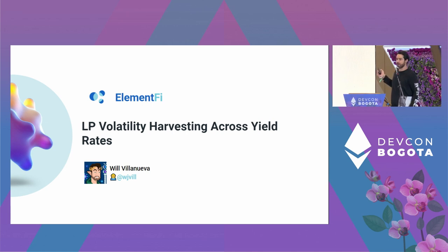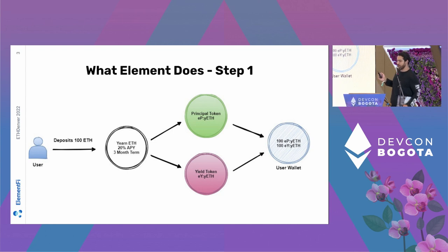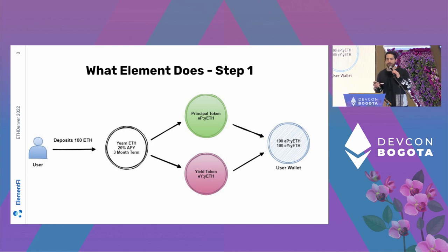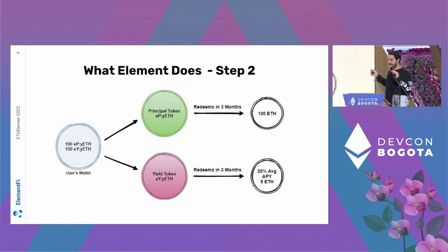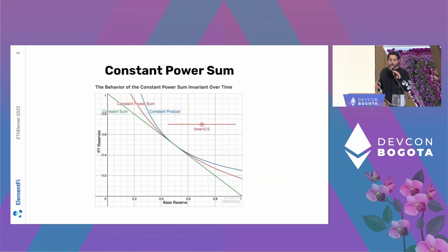Let me give a quick intro into what Element Finance does. Element Finance at its core is a yield splitting protocol. We take different yield sources — say an stETH position or a Yearn position — and if you put a million dollars in, we take that position and split it into two parts: the principal and the interest. With a one-year lockup at 20% interest on a million dollars, you'd have 200k in interest, and at the end of the term you can collect both.